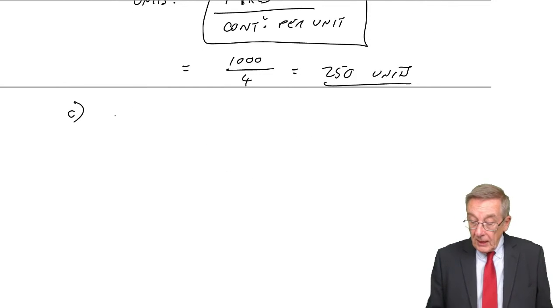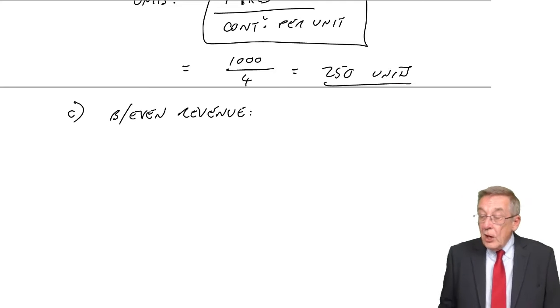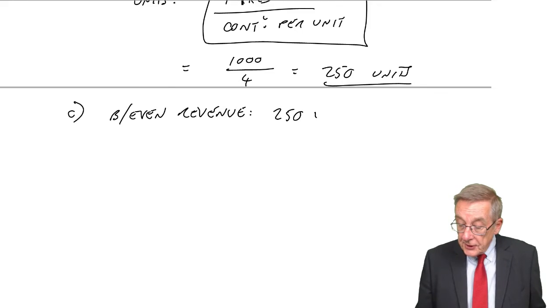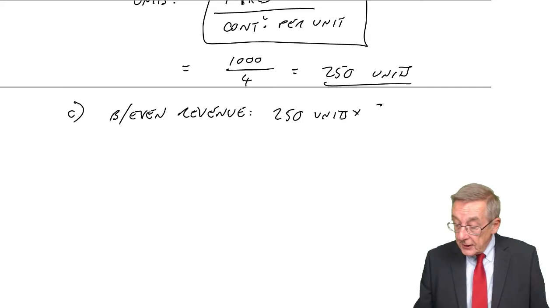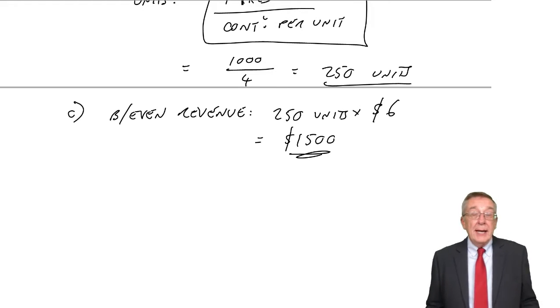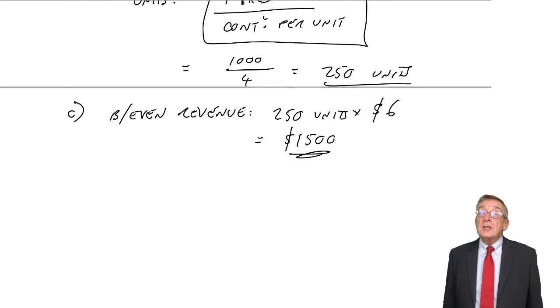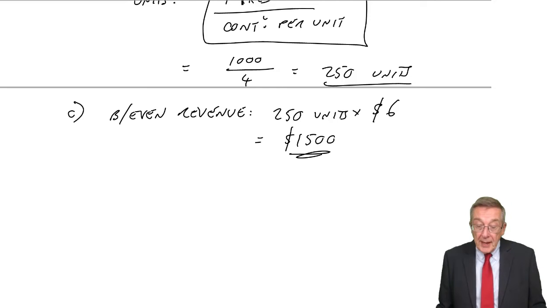Part C, that's easy, surely. We know we need to sell 250 units to break even. How much revenue would that generate? Well, the selling price is $6 a unit, and so a total of $1,500. So if you look at it either way, as long as we sell more than 250 units, we'll make a profit, or as long as we get more than 1,500 revenue, we'll make a profit.